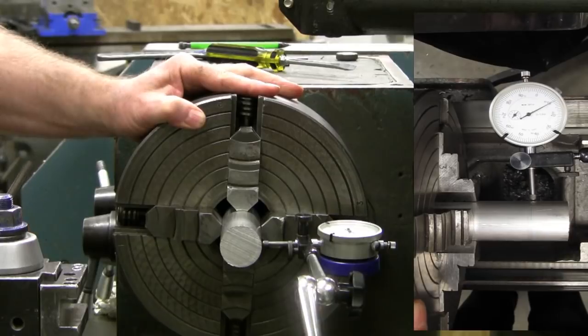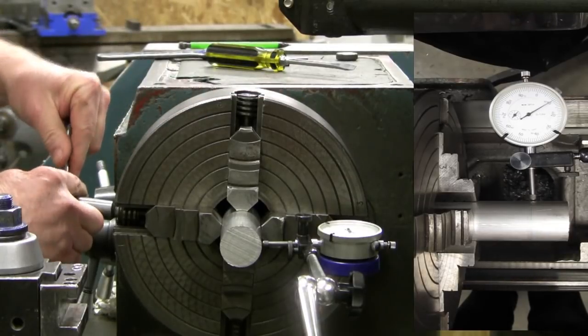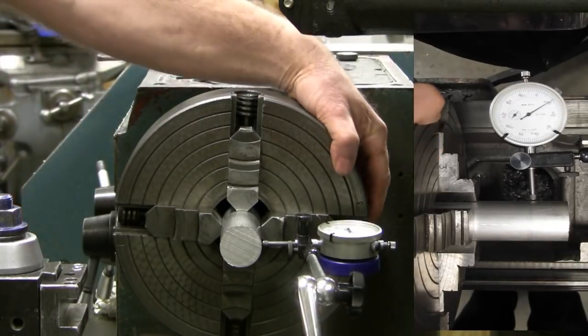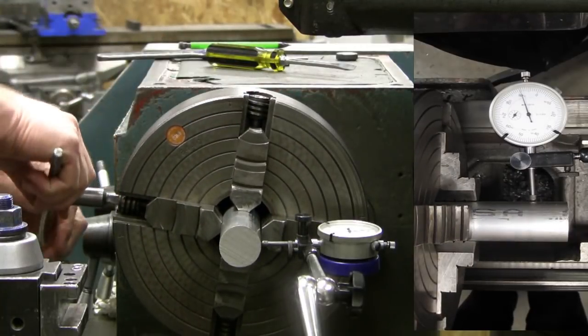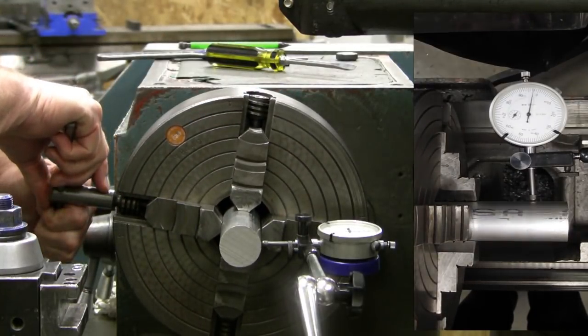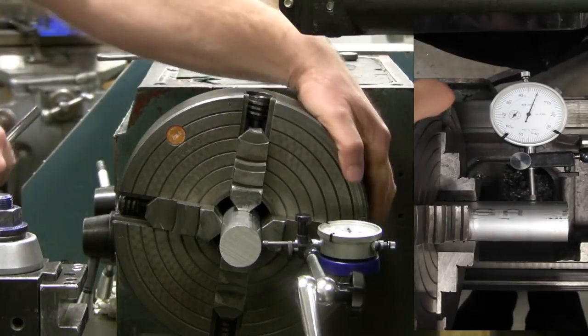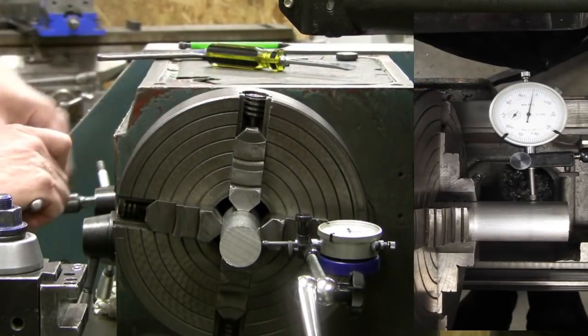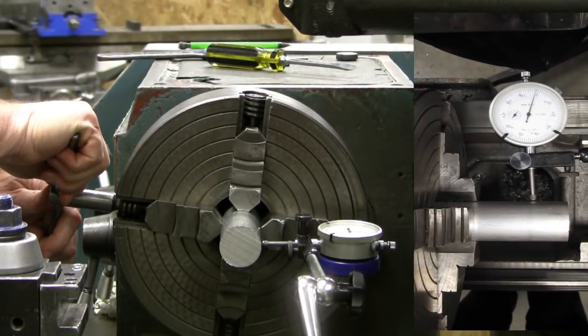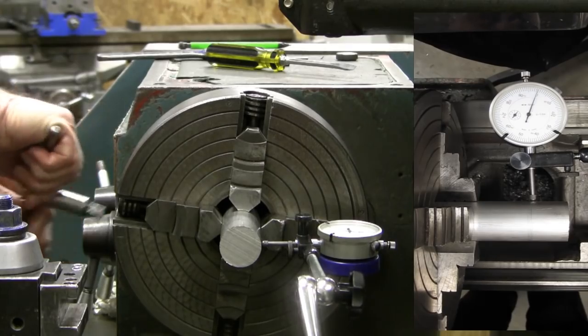On the higher reading jaw I'll loosen that, not much but a little bit, and then bring it around to the other one and I tighten that up, bringing the needle to zero. Bring that around this way and I tighten this one in till it reads about zero. Now it should be within just a very few thousandths of an inch of run out.